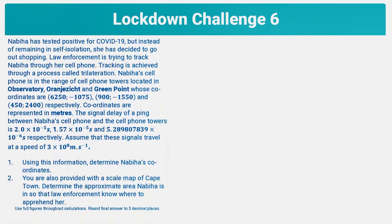Let's go on to the question. I've taken the liberty to highlight all the important information, which is basically the figures and the numbers. In this question, we are told that someone has violated the rules of the lockdown. They've tested positive for COVID-19, but instead of remaining in self-isolation, they have decided to go out shopping, and we have to track this person by means of their cell phone using a process called trilateration.